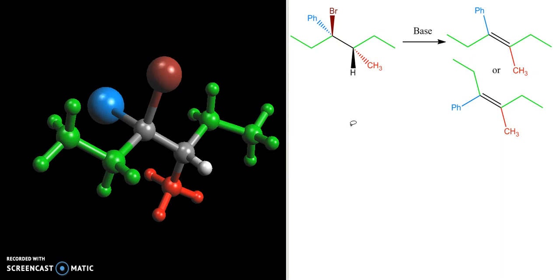And we know that what determines which product we get is that this bromine and this hydrogen have to be anti-periplanar to one another. Sometimes this arrangement of the bromine and the hydrogen is referred to as anti-coplanar as well.